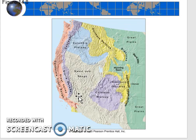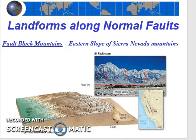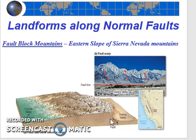The basin and range province butts up right up against the Sierras. Thus, the east side of the Sierras is a great example of a fault block mountain right here. There's a series of normal faults directly along the east side of the Sierras and into the basin and range province.